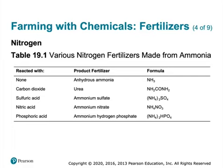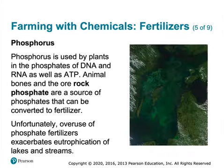One of the things to counteract that acidity is lime, which can be added to the soil to make it more alkaline — or 'sweeten the soil,' as it's called.